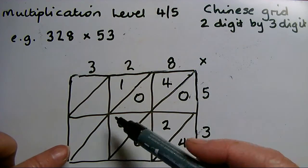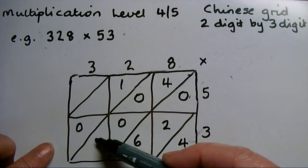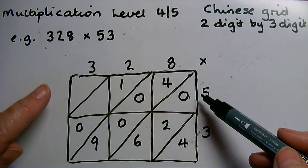In the bottom left hand corner, 3 threes are 9, has to be written in as 09. 5 threes are 15, so I write in 1 and 5.